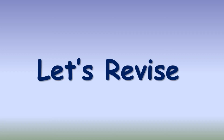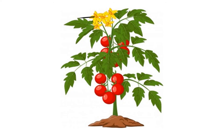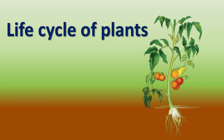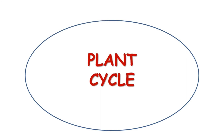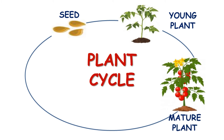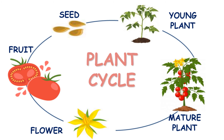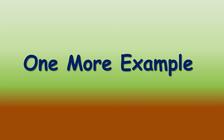Let's revise: flower, leaf, fruit, stem, root. Life cycle of plants: a plant's life cycle starts when a seed falls on the ground — seed, young plant, mature plant, flower, fruit.